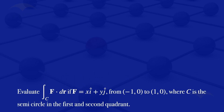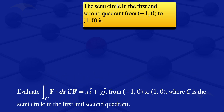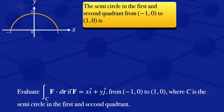I'll start by drawing the semicircle in the first and second quadrant from the point minus 1, 0 to the point 1, 0. So I have my x-axis and my y-axis, with the point minus 1, then the origin, and then 1 on the x-axis, and 1 on top. We have the semicircle from minus 1, 0 to 1, 0, and we'll call that our curve C.